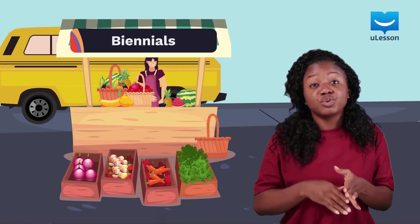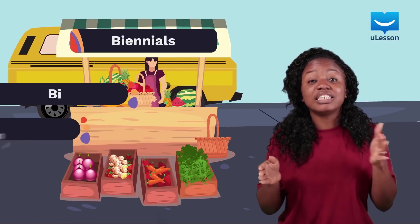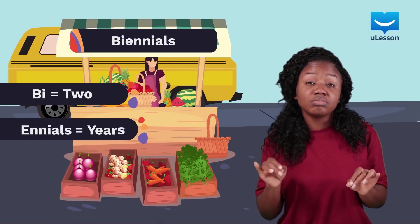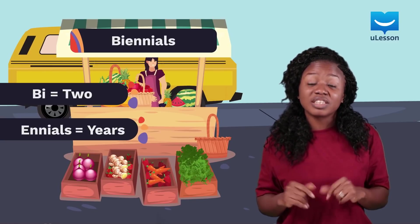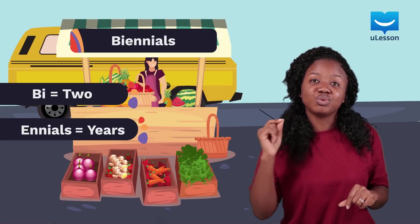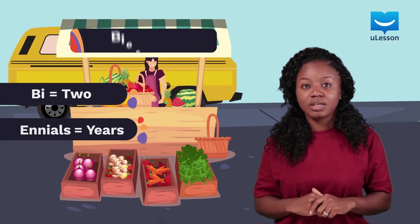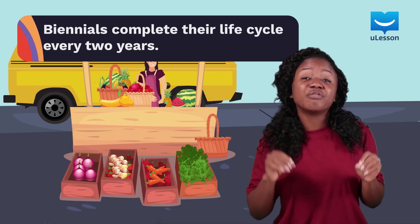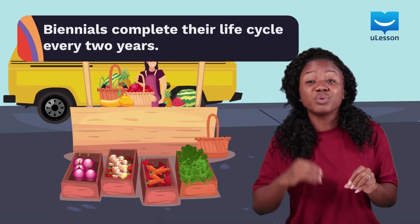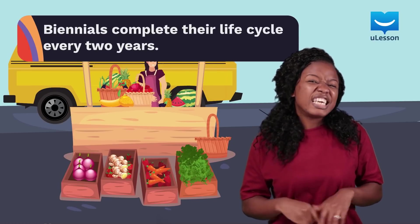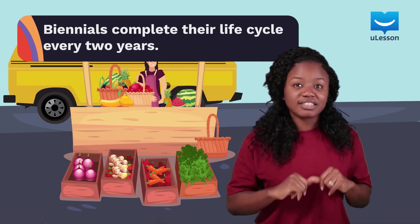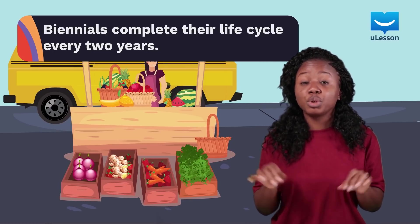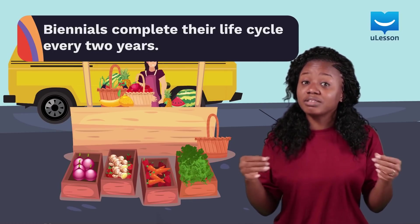Biennials can be chopped into bi and ennials, with bi representing two, and this translates to every two years. These crops complete their life cycles every two years or seasons. In the first season, they grow vegetative parts like leaves, roots, and stems.